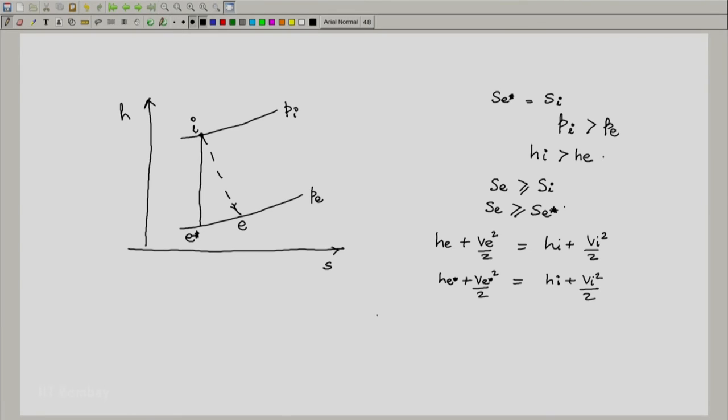But since we see that just as in a turbine there is a lesser Δh now actual compared to the ideal Δh and since h_e* is a quantity which is less than or equal to h_e, this implies that v_e* is a quantity which is greater than or equal to v_e.